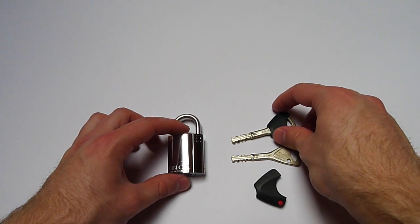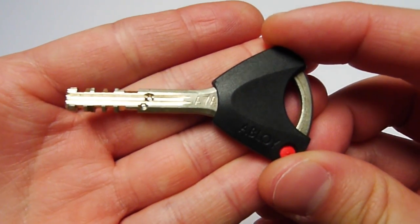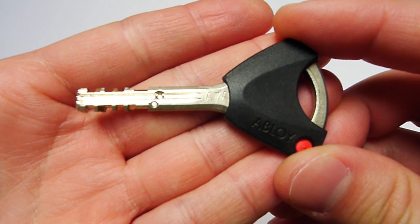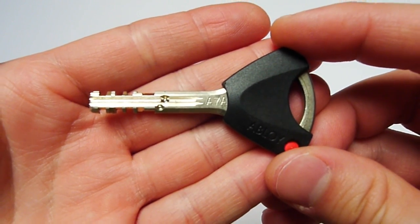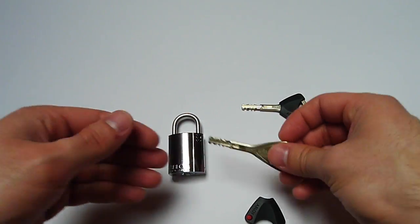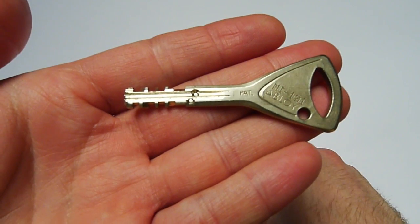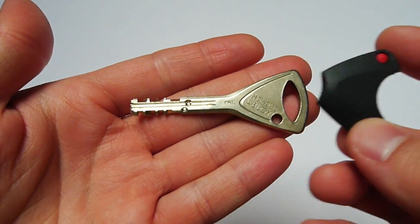So the keys have a cover at the end of the key and I have removed this cover on one of the keys so you can see that it is a normal ProTec key just with a cover at the end of it.